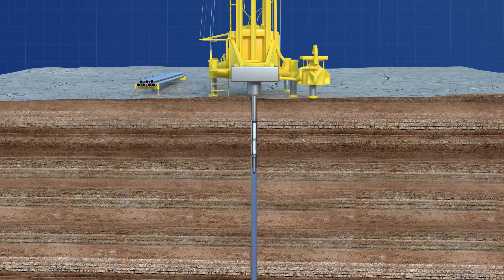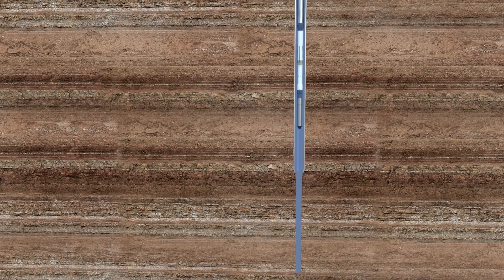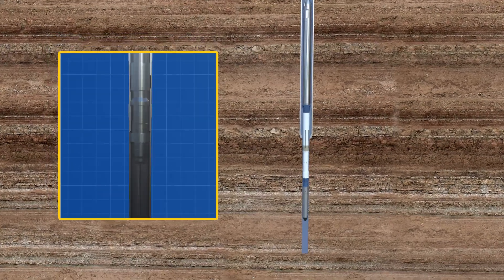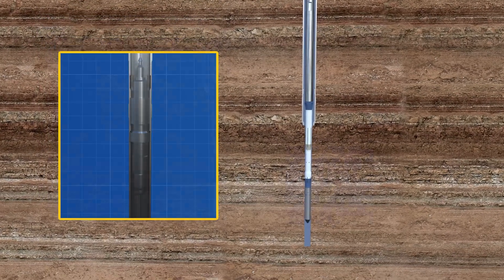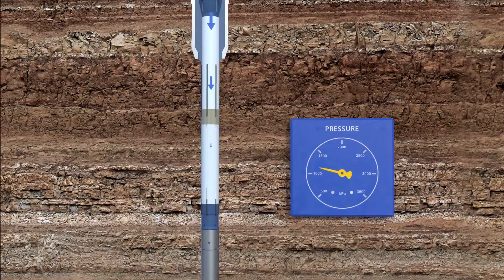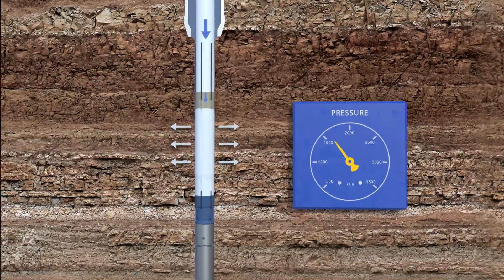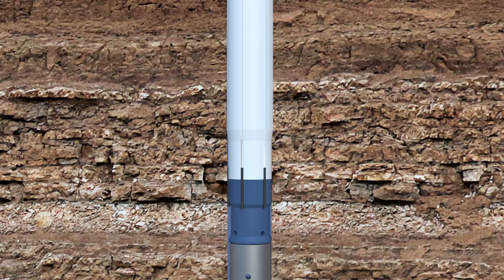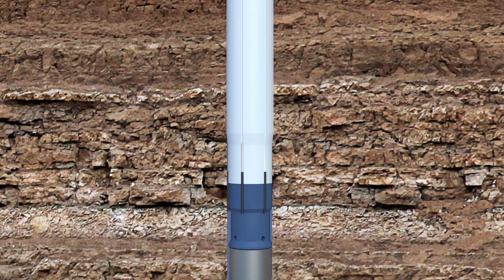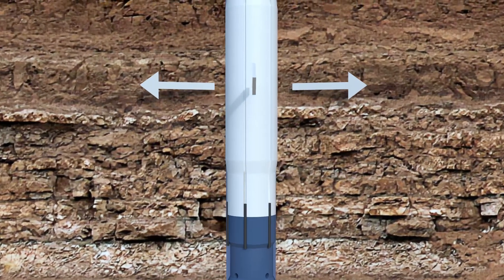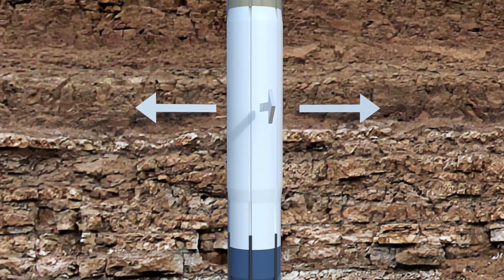Once the installation assembly strikes water, it is released to float to the bottom of the hole, seating on the landing ring at the back of the core barrel. The strain cell is then inflated from the surface using differential water pressure in the drill pipe or compressed air. During inflation, the strain gauges are pressed directly against the rock while the epoxy cement cures.